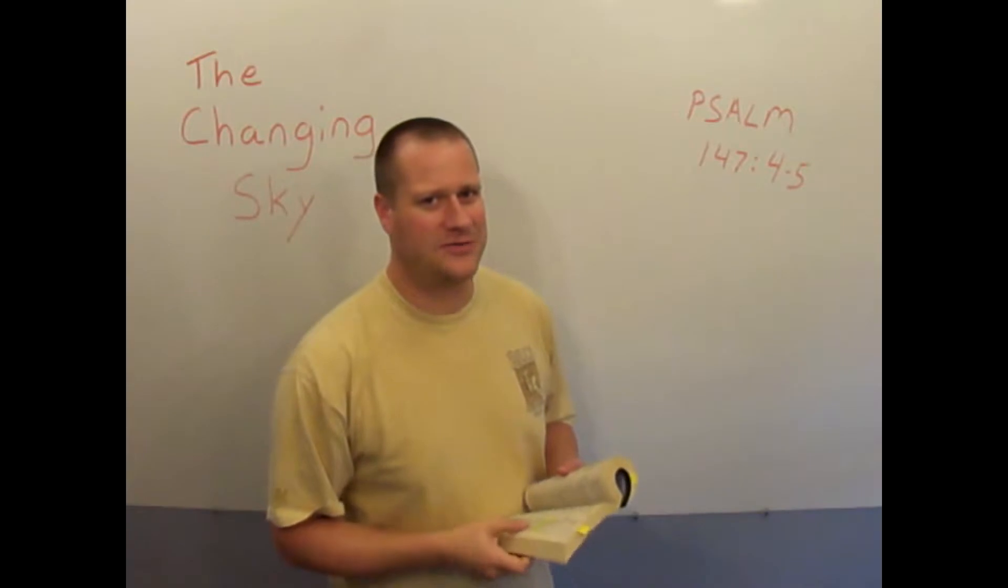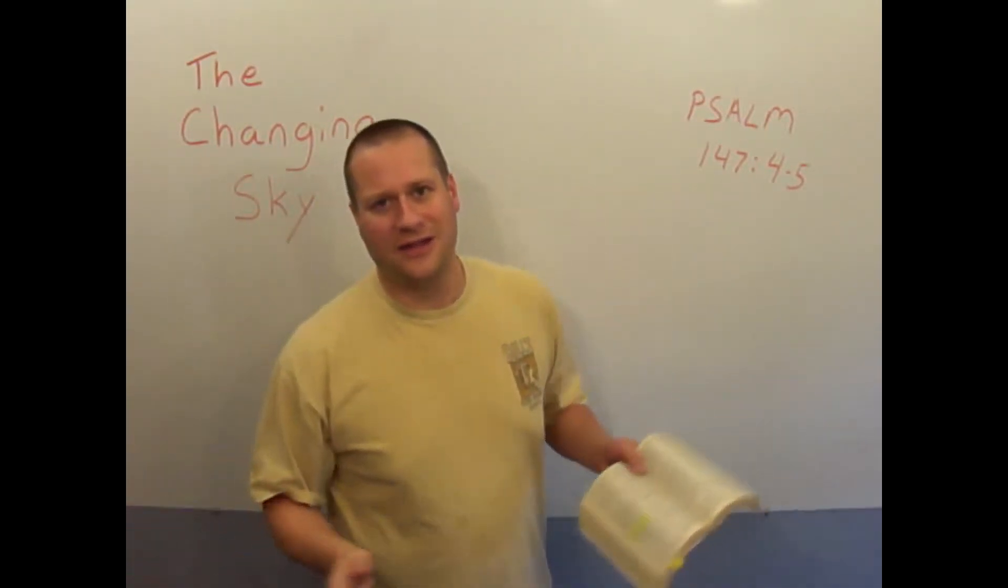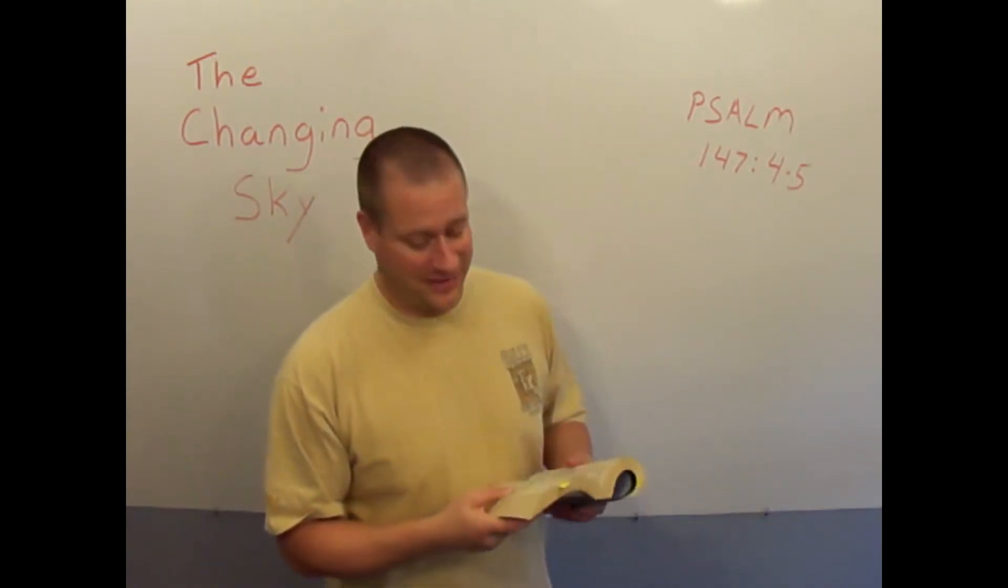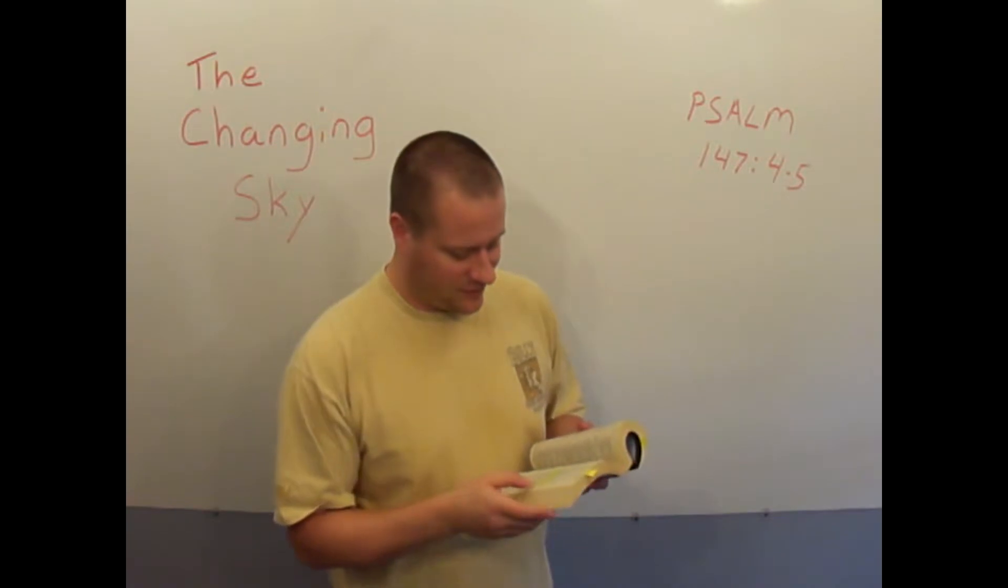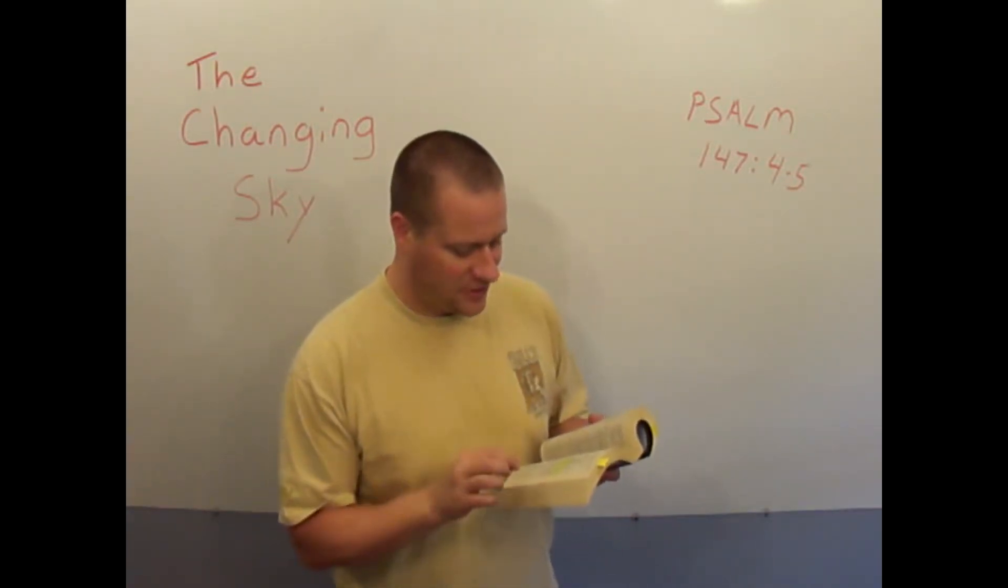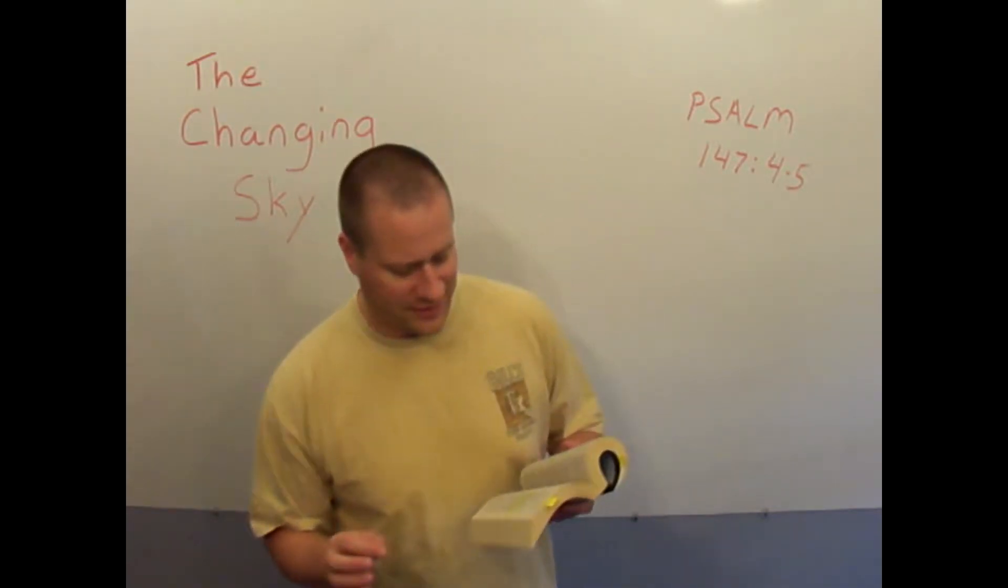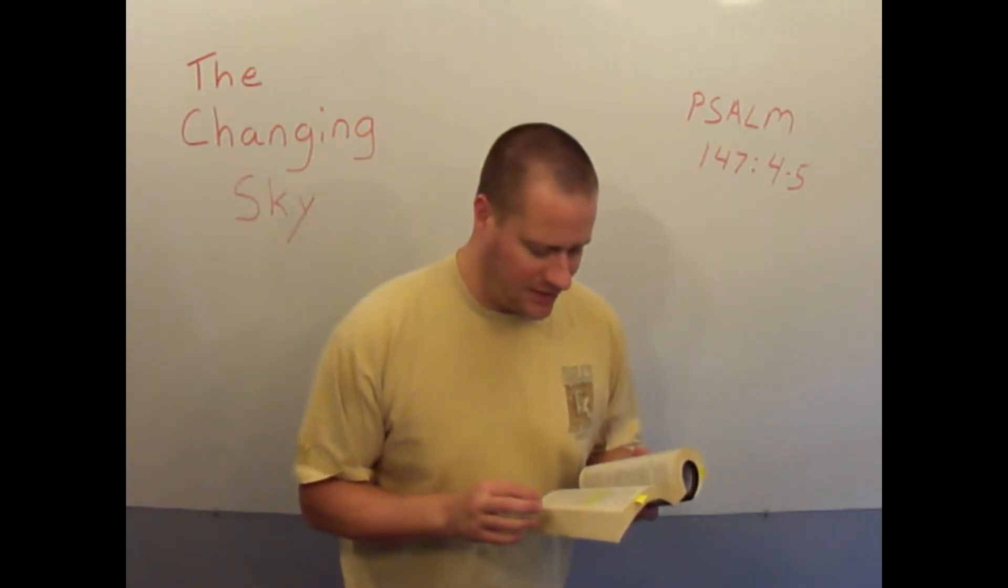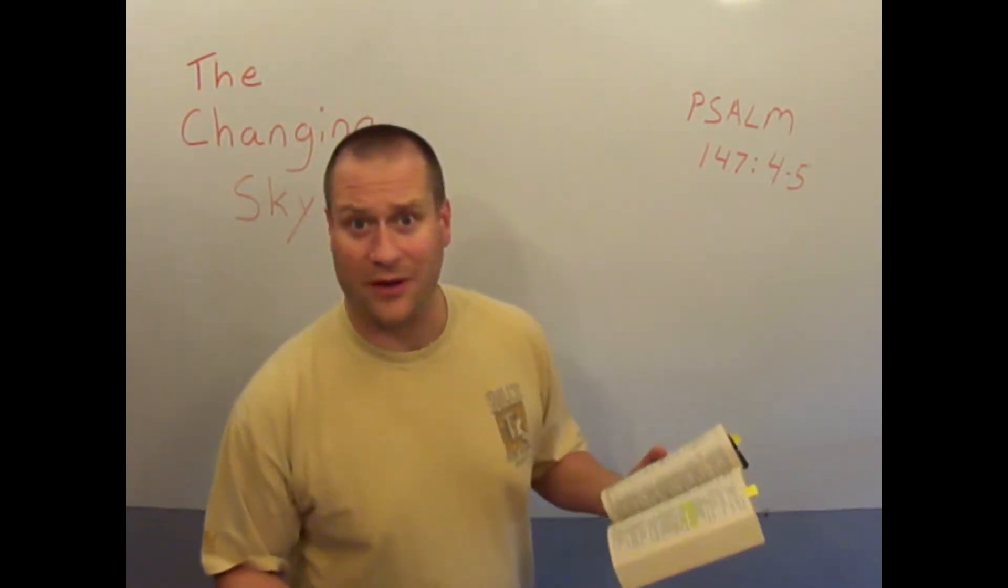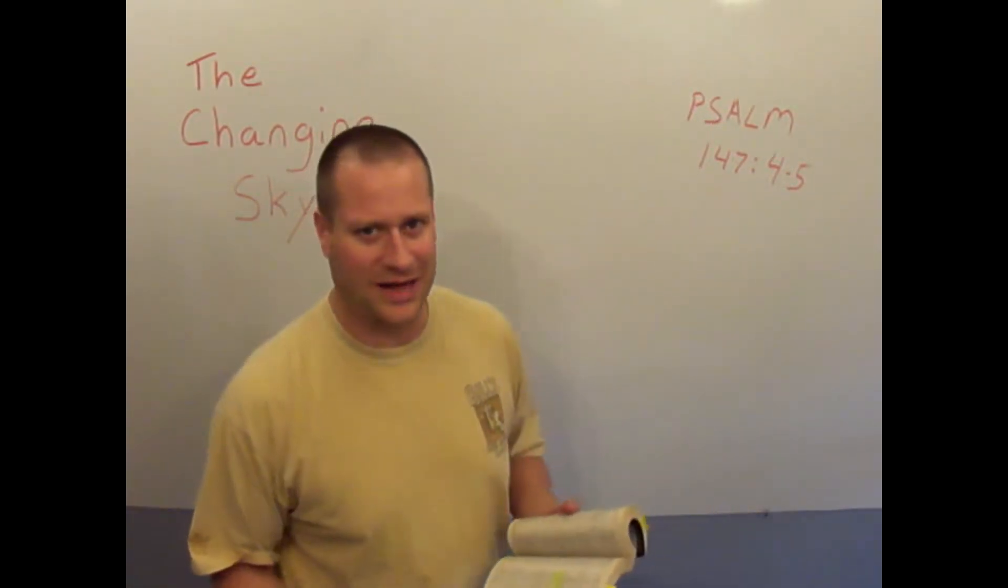A quick side note that I think you'll be interested in. We talked about how there's billions of stars and we've named a few of them. But I wanted to just quote this verse to you. Psalm 147 verse 4 and 5 says God knows every star that he made and has given each and every one of those stars names.